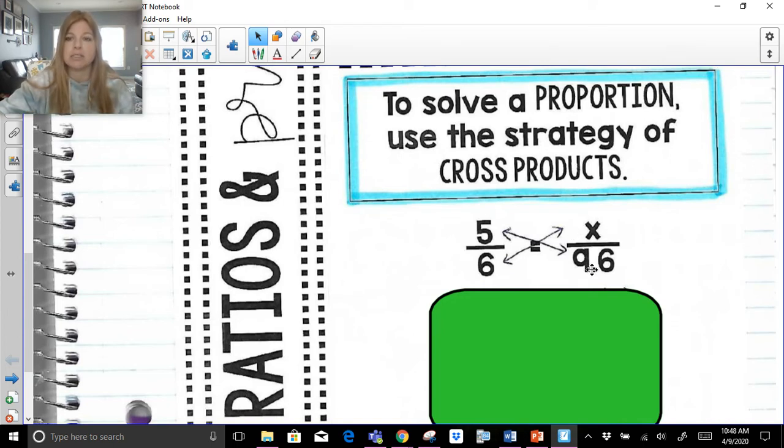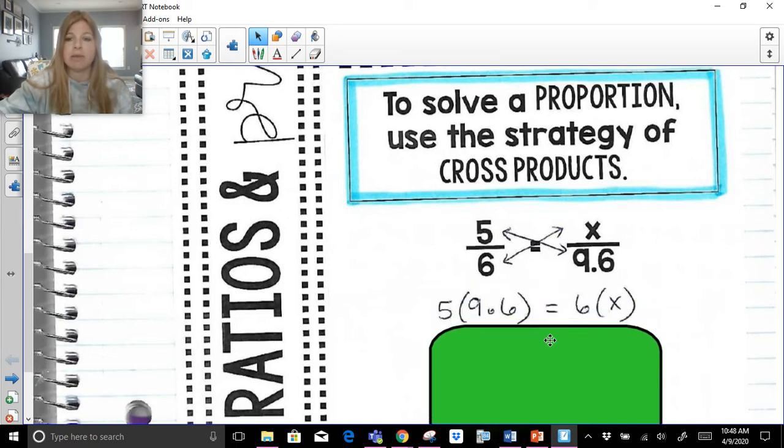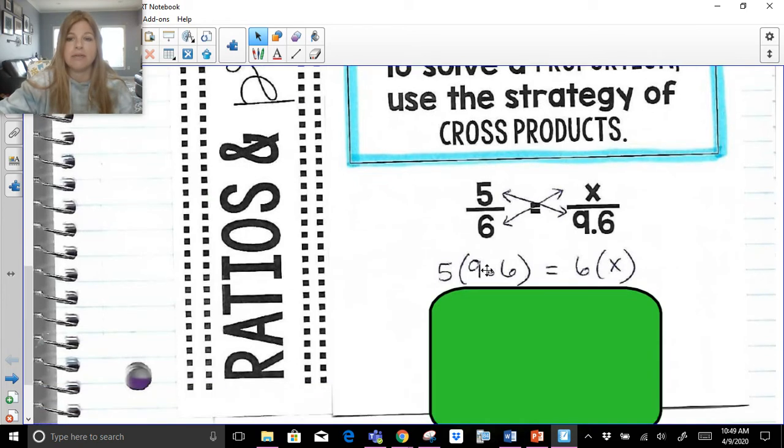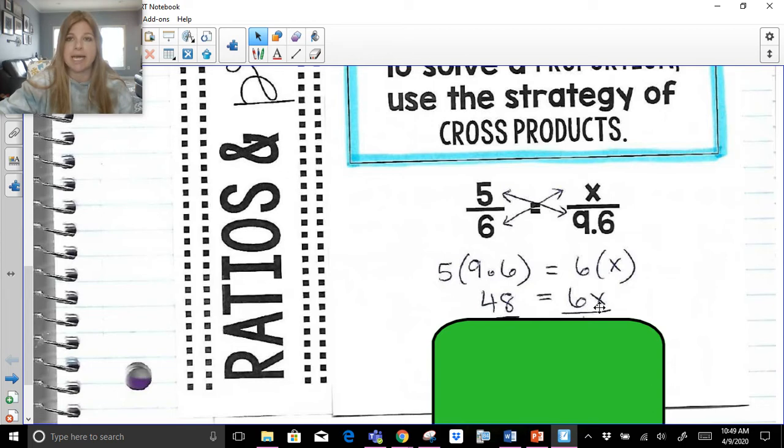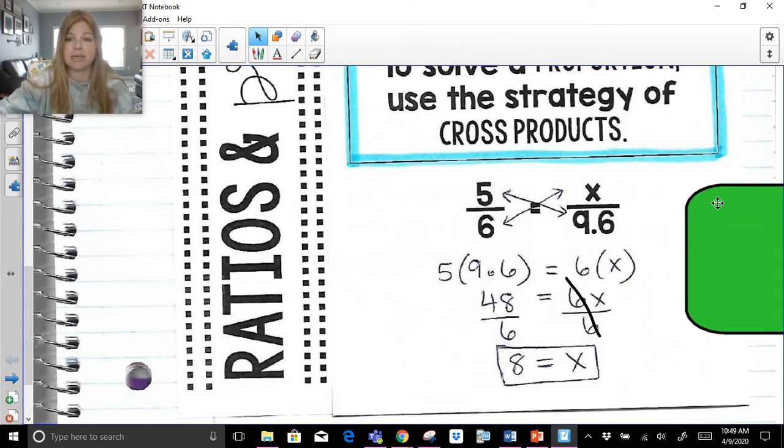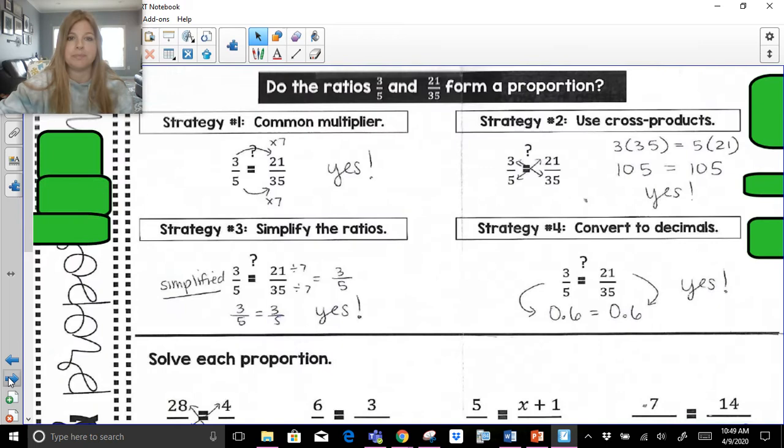So here, if I wanted to use the strategy of cross products, a way that I determined whether or not something even formed a proportion, to solve for x, this is what it would look like. 5 times 9.6, and then 6 times x. If I multiply those directly across, 5 times 9.6 is here, 6 times x is here. 5 times 9.6 is 48, 6 times x is 6x, and then I do my one-step solving equation skills, divide both sides by 6, and the answer is 8. Now, guess what would happen? If I typed in 5 divided by 6 into my calculator, I'm going to get 0.83 repeating. Guess what would happen if I typed in 8 divided by 9.6? I'm going to get the exact same answer, 8.3, I'm sorry, 0.83 repeating. So it's going to confirm to me that I get the exact same decimal value. I know it's got to be good.